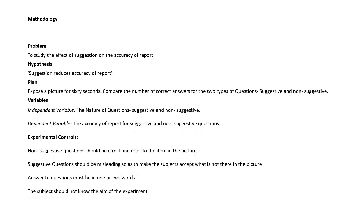Then comes hypothesis. Hypothesis is a tentative statement which is either proved or disproved at the end of the experiment. The hypothesis for this experiment is: suggestion reduces the accuracy of report. This is a simple statement which we are going to either prove or disprove for a particular subject at the end of the experiment.